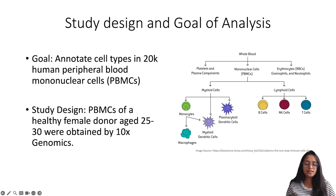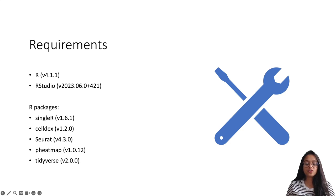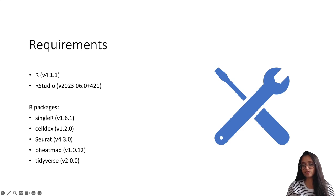We will be using the same dataset from the previous video — the goal is to annotate 20,000 peripheral blood mononuclear cells from a healthy female donor. In this demonstration I will be using two reference datasets instead of one to annotate these cell types. The requirements for today are these packages: SingleR to perform cell type annotation, celldex which provides reference datasets including many single cell atlas datasets, Seurat for preprocessing steps for single cell RNA sequencing data, pheatmap to visualize heat maps, and tidyverse to wrangle the data.